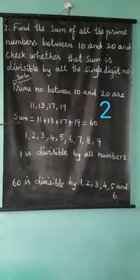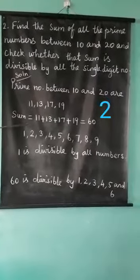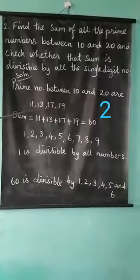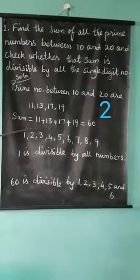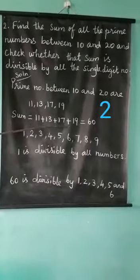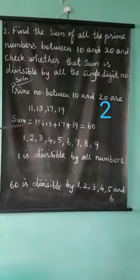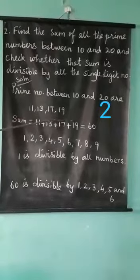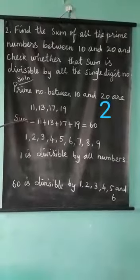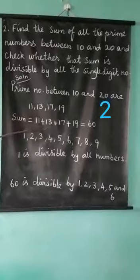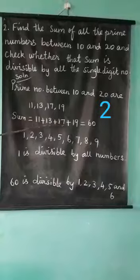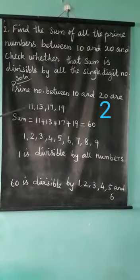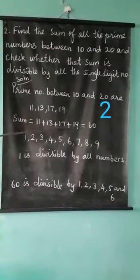Next, we find the sum — that means we add the 4 prime numbers: 11 plus 13 plus 17 plus 19. Here, 11 plus 19 equals 30, and 13 plus 17 equals 30. So, 30 plus 30 equals 60.